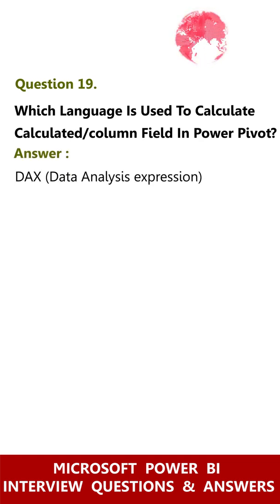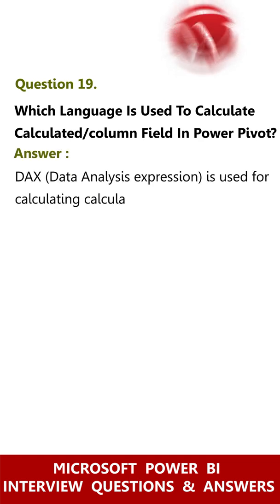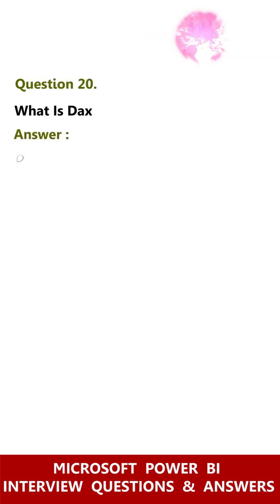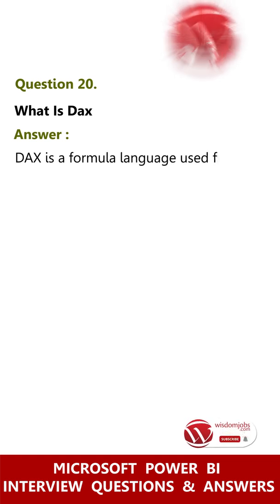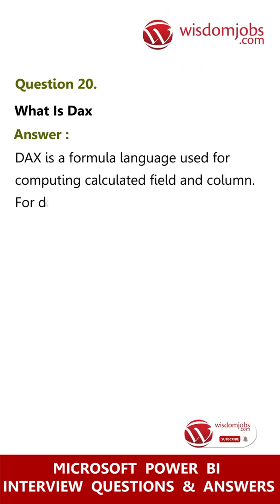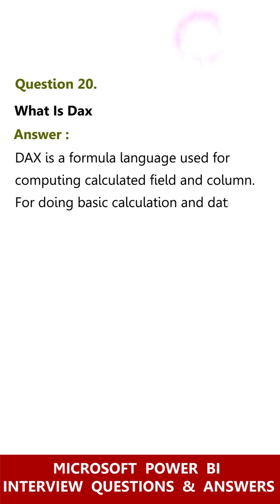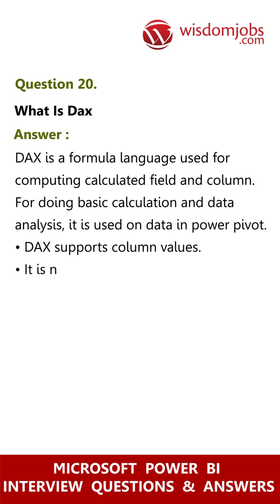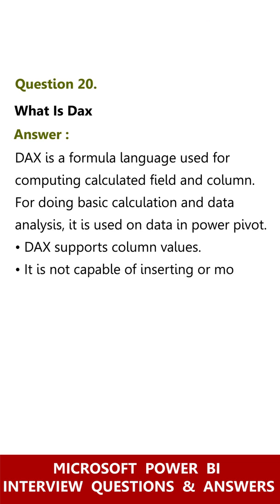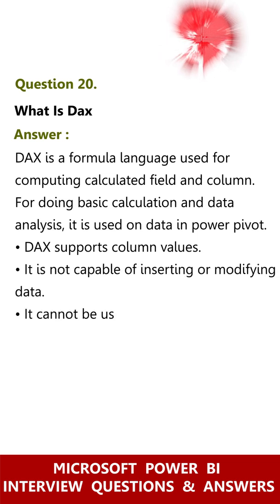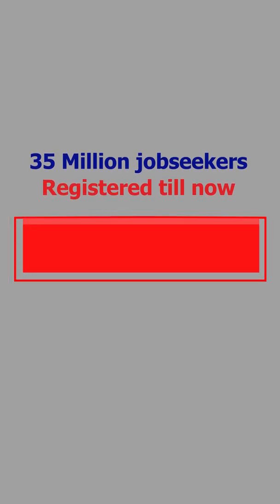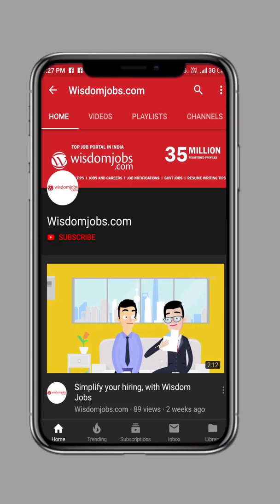Question 19: Which language is used to calculate a calculated column field in Power Pivot? Answer: DAX (Data Analysis Expressions) is used for calculating calculated column fields in Power Pivot. Question 20: What is DAX? Answer: DAX is a formula language used for computing calculated fields and columns for doing basic calculation and data analysis. It is used on data in Power Pivot, supports column values, but is not capable of inserting or modifying data and cannot be used to calculate rows, though you can calculate measures and calculated columns.